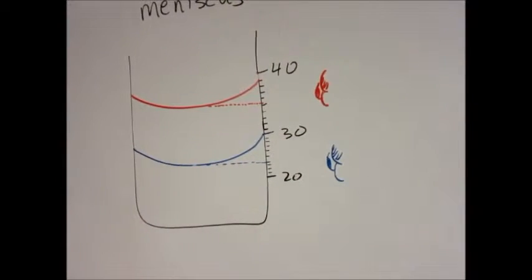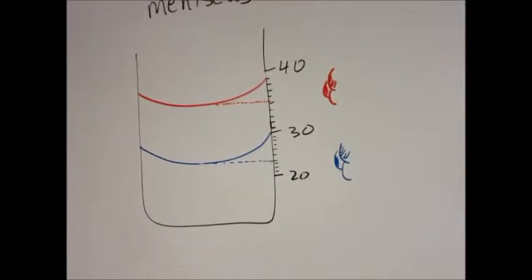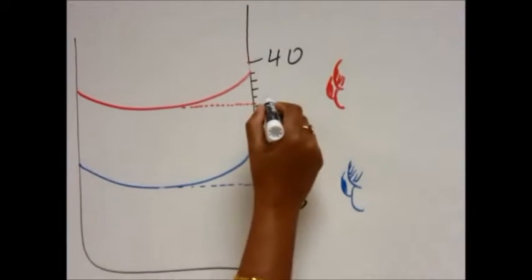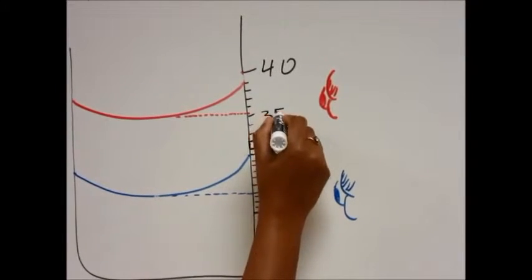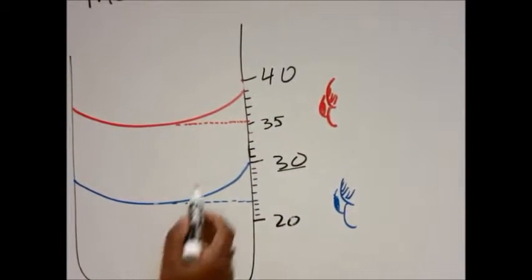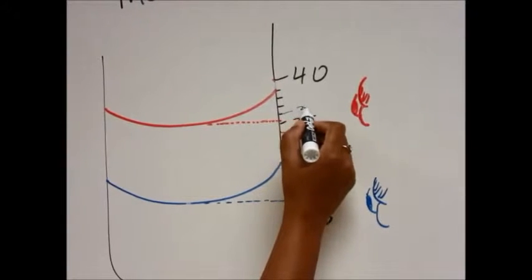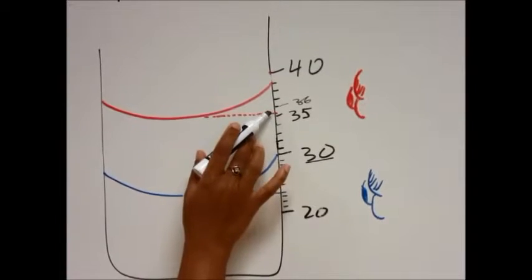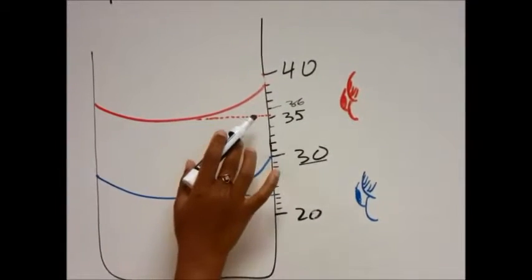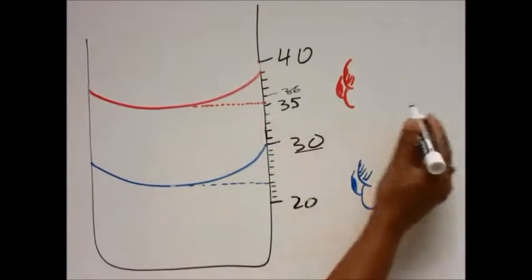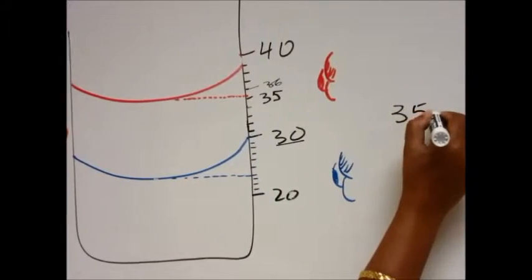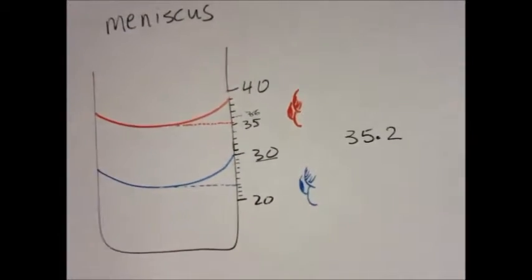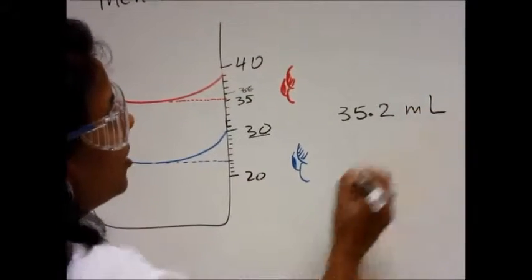Let's read this one and see what it is supposed to be. This measurement here is 30, this one is 35, and this one is 36. The level of liquid is just a little bit above 35, so it could be 35.2 milliliters. That is how much you can read.